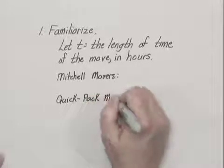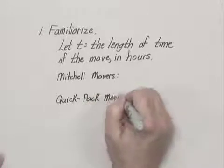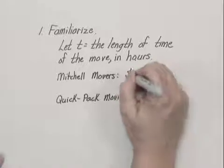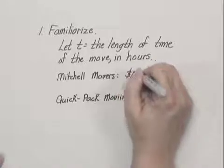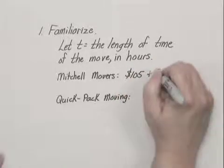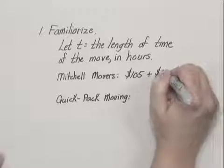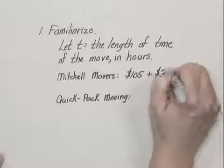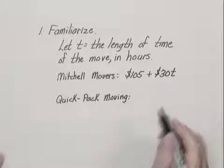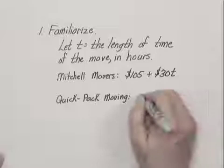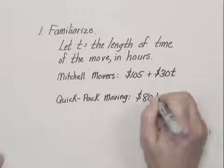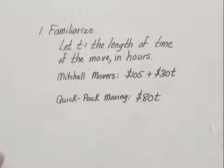Mitchell Movers charges an initial fee of $105 plus $30 an hour, which is 30 times t. And Quick Pack Moving doesn't charge an initial fee, but they charge more per hour — $80 times the number of hours.